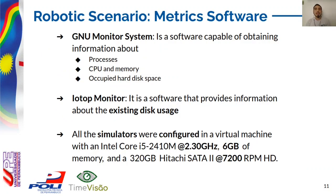To measure each evaluation component, we use the Nmon monitor system, which is capable of obtaining information about resource usage by process at every moment, the current CPU and memory usage visualized in a real-time graph, and the occupied hard disk space. Also, the IOTOP monitor is a software that provides information about the existing disk usage by a process or sub-process in the system, and is useful to track those processes that present a high read-write operation rate on the hard drive unit.